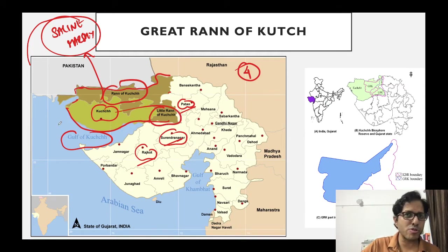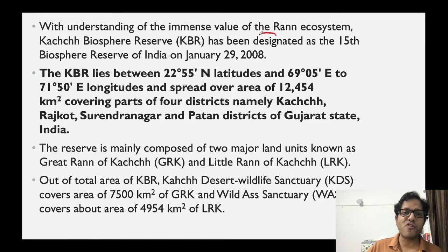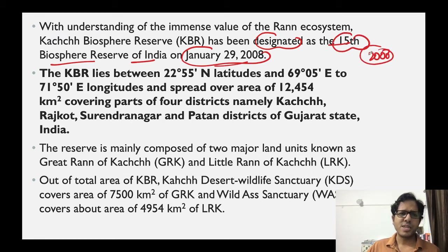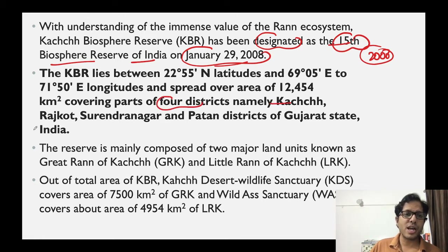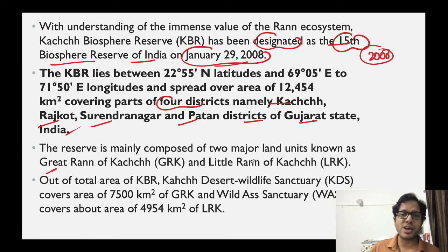The Run of Kutch Biosphere Reserve was designated as the 15th Biosphere Reserve of India in January 2008. It spans 4 districts: Kutch, Rajkot, Surendranagar, and Patan in Gujarat State, India. It has 2 subdivisions: Greater Run of Kutch and Little Run of Kutch.